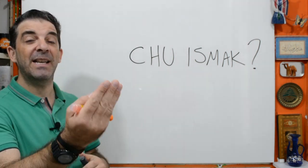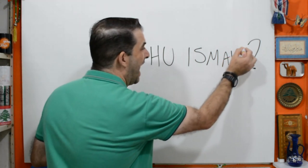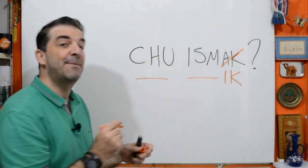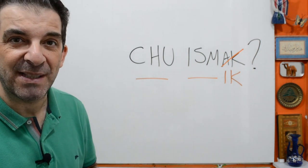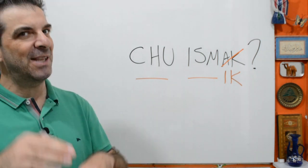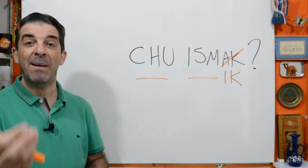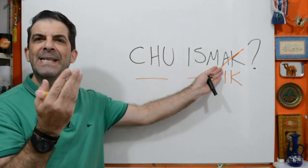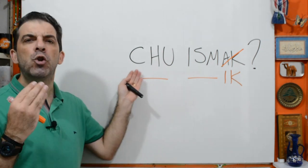Now, if you're facing a woman, a girl, a female person, you'll have to change 'ak' for 'ik.' Then you say shuu ismik. This is because your possessive adjectives and pronouns in Arabic are related to male and female — but this is also a subject for further classes. Just learn it as it is, memorize it. Facing a boy, say shuu ismak. Facing a girl or woman, say shuu ismik.